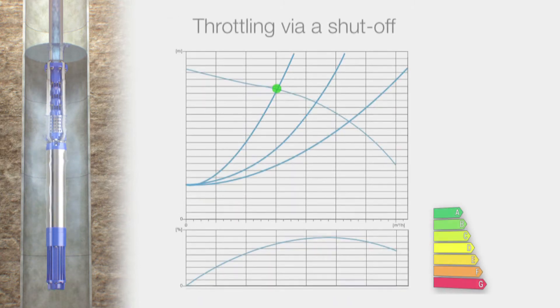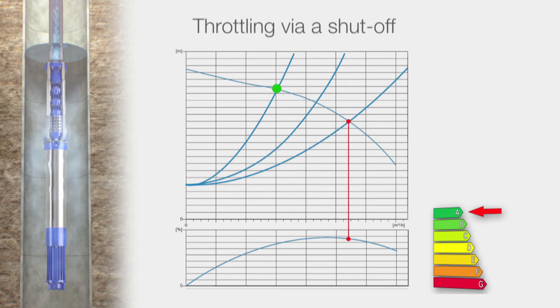Number 2 – Throttling the pump performance via a shut-off. By operating at a partial load, not only the pump and energy efficiency is minimized, but energy is also dissipated through throttling.